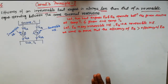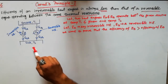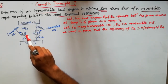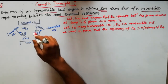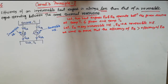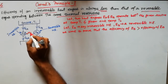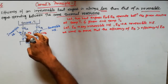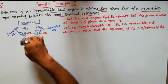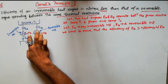To prove it, consider a block diagram where source temperature is T1 and sink is T2. Engine Ea is the irreversible heat engine and Eb is the reversible heat engine. Both engines are working under the same source and sink. Ea has a heat flow of Q1a and a heat rejection of Q2a, producing work Wa. Similarly, Eb produces work Wb.